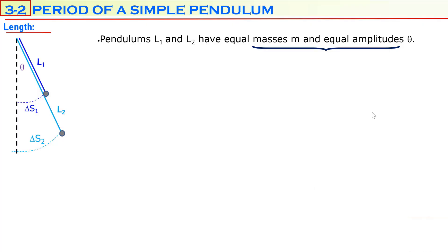We are going to study how length affects the period of a simple pendulum. We will consider two simple pendulums: one has a length of L1, and the other has a length of L2. The second pendulum is longer in length than the first.